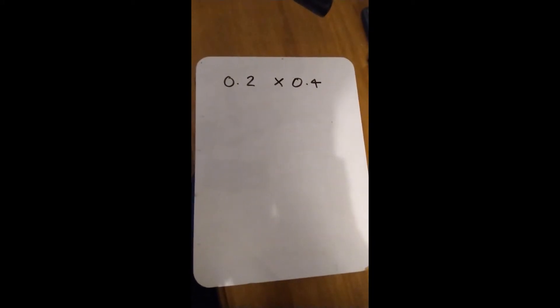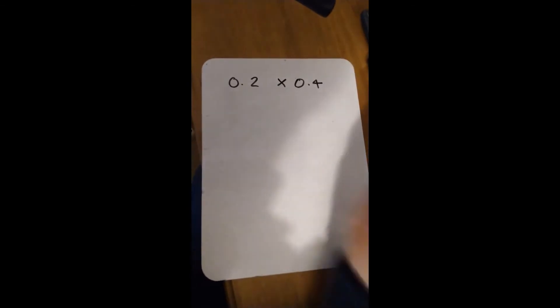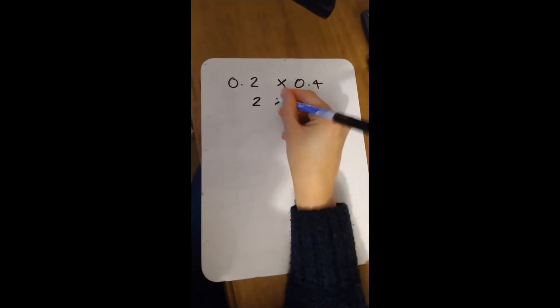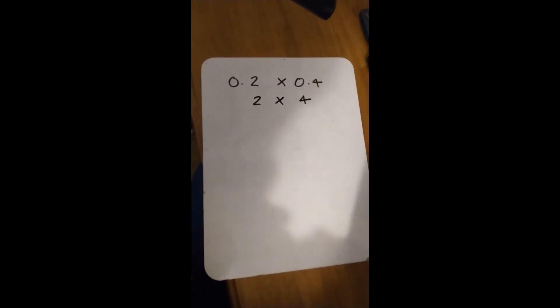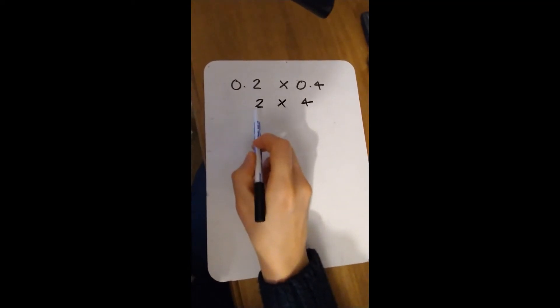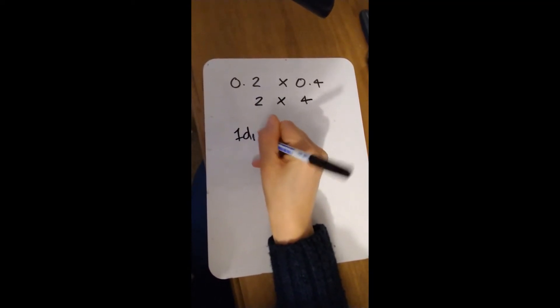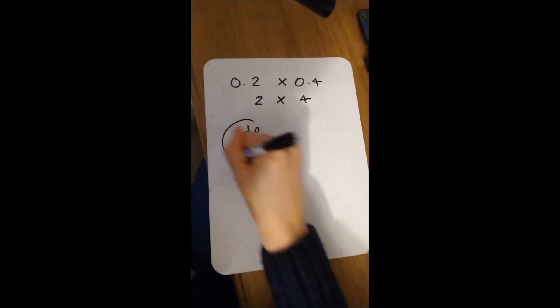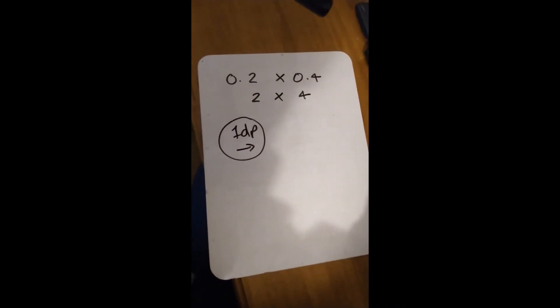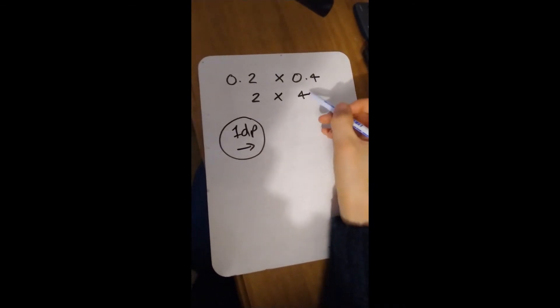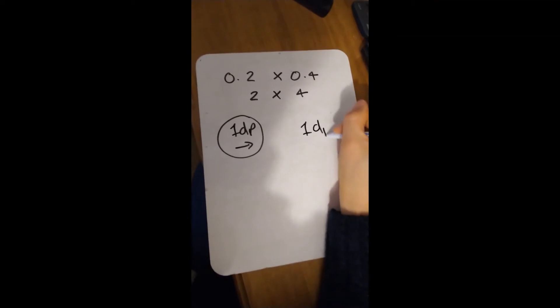Now, what numbers do I know that easily multiply? I know 2 times 4, that's easy. So what's happened from here to here? I've moved one decimal place to the right. I've written myself a note to remember that - from here to here, one decimal place to the right.